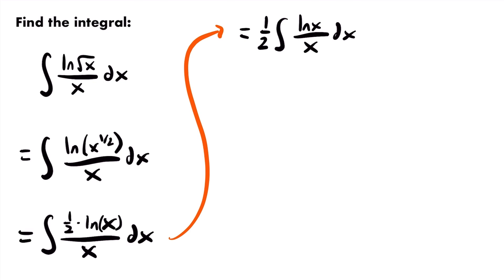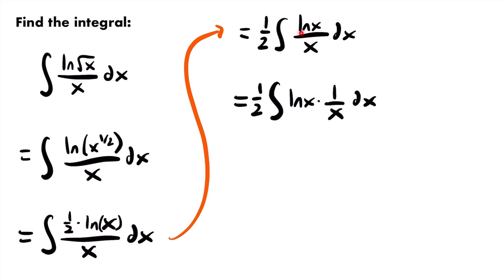Now we have a new integral to solve, and we can try u-substitution again. Looking at this integral, do we see a function and its derivative? Yes — we see the natural log function and its derivative, one divided by x. We could rewrite this as one-half times the integral of the natural log of x times one divided by x, dx. The derivative of the natural log of x is one divided by x, so we can use u-substitution.